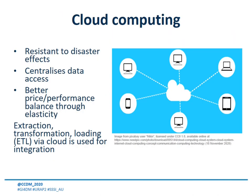Cloud computing involves the use of off-site computing resources in a distributed computing network. The benefits of cloud to disaster management are that it's resistant to disasters due to its dispersed nature — if one data center is affected by a disaster, all data and processes can be transferred to another data center outside of the area of influence. It also helps by centralizing access to the data through the internet, so anyone can access the data network wherever they are, and the data network is consistent for all users.